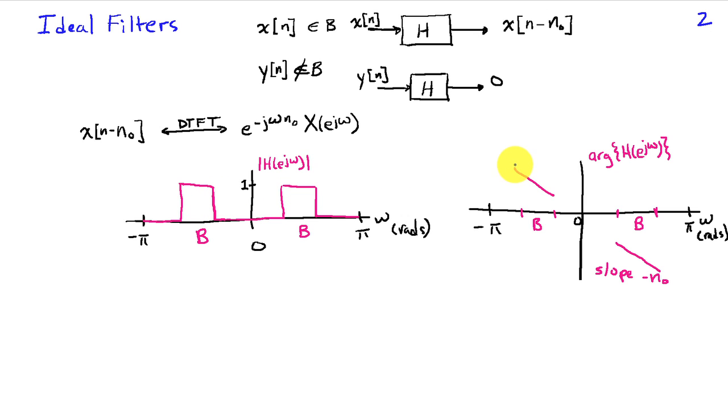And then in the phase characteristics, it's going to have a linear phase with a slope of minus n-naught in the band of interest B.